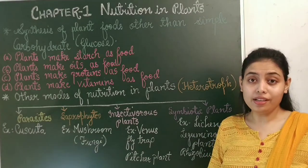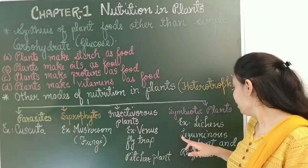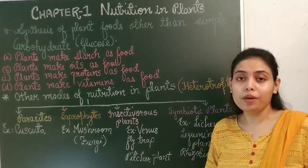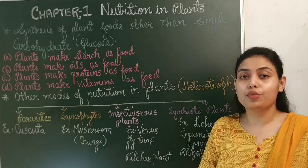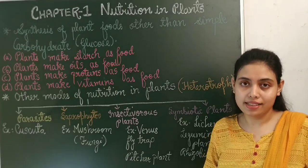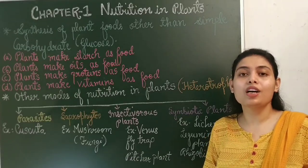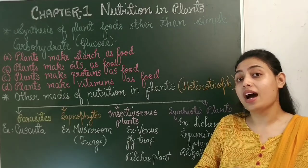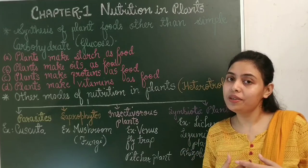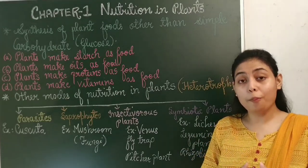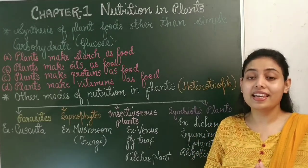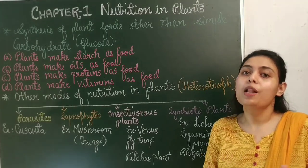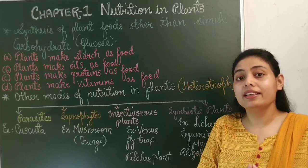Another example is leguminous plants and Rhizobium. Rhizobium is a bacterium which lives in the roots of leguminous plants and helps the plant to absorb nitrogen from the soil. In return, Rhizobium absorbs prepared food from the plant. In this way, Rhizobium and leguminous plants help each other in obtaining their food.